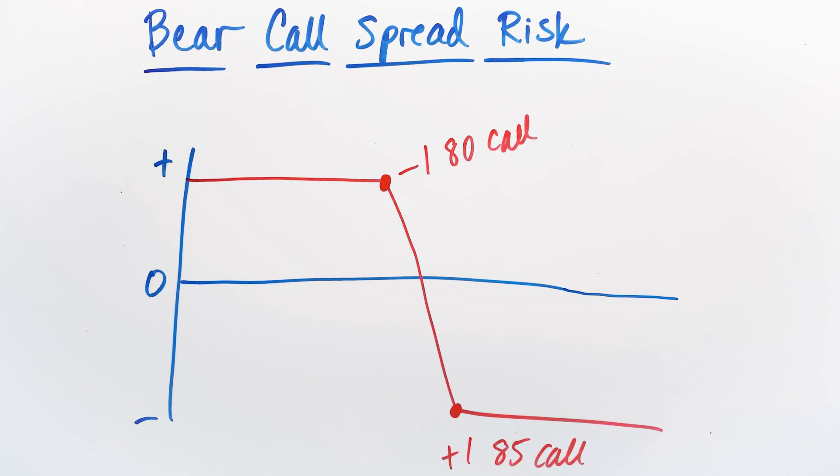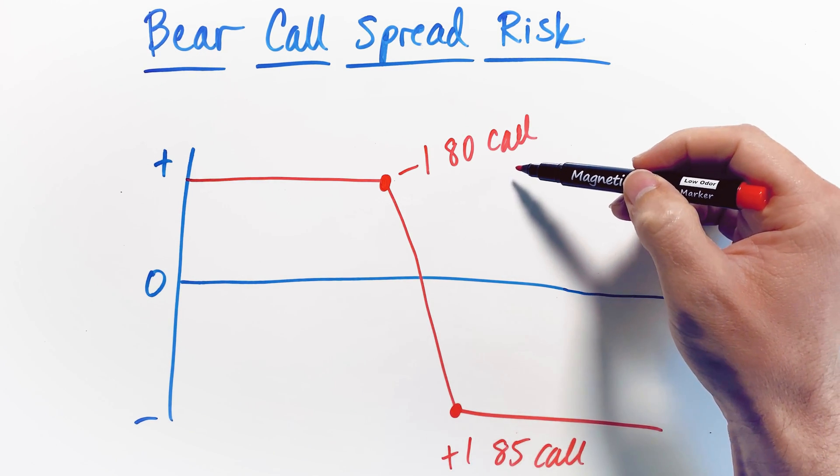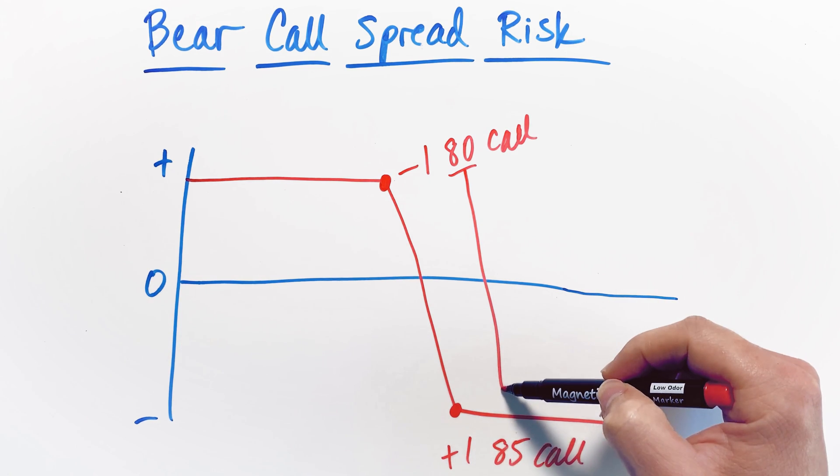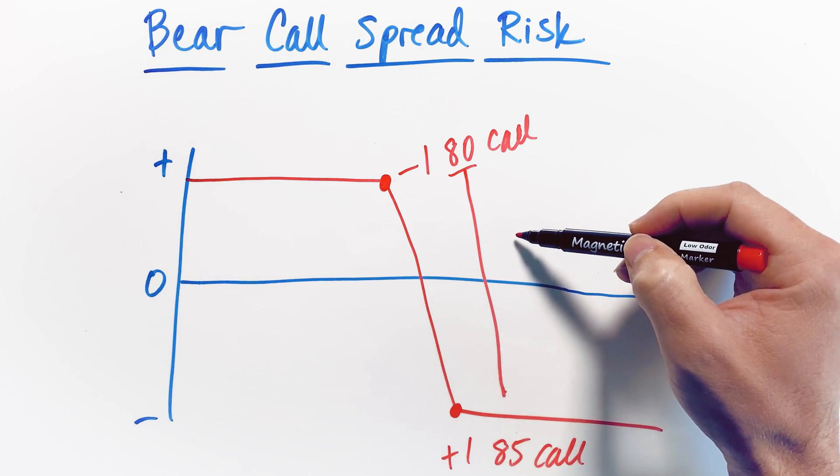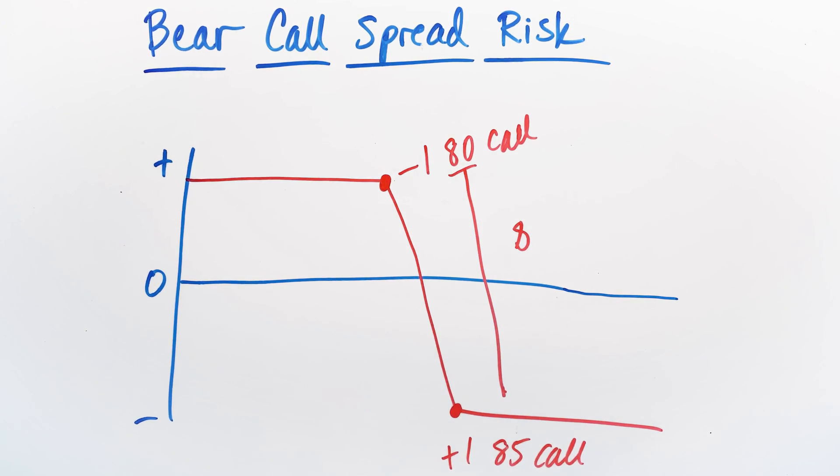This is important to start off with the risk calculation because the first thing that we have to use or the first thing we need to understand in order to determine the risk is we need to determine the width of the spread that we're trading. So in this case, the width of the spread is very easy to determine. It's just simply the difference between 80 and the 85 down here.